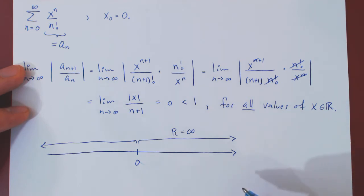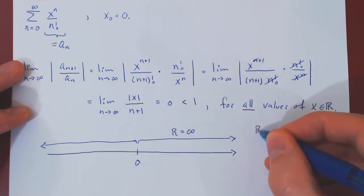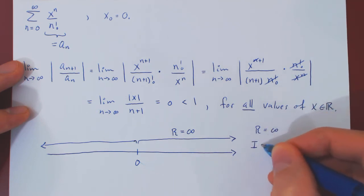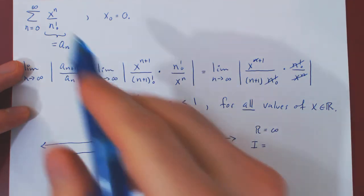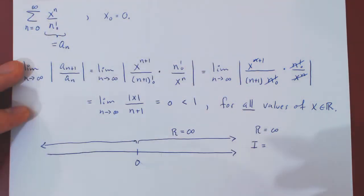And if you think about it, what is therefore the interval of convergence? Well, the interval of convergence contains all values of x for which the power series converges. But as the power series converges for all values of x, I is simply the real line, or if you prefer, the interval from negative to positive infinity.